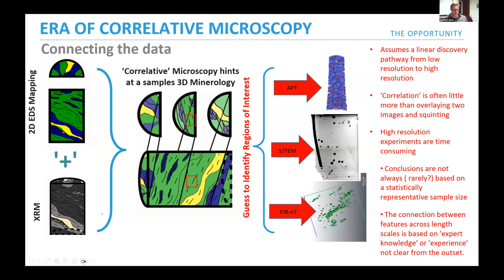We've entered what is called an era of correlated microscopy. The idea is that you take a sample, put it in an X-ray CT system, polish at least one surface, and take an energy dispersive spectroscopy map to get a chemical map. Overlaying these creates a correlative digital twin. From there you use expert knowledge to identify higher-resolution features to examine with SEM, FIB, STEM, or atom probe — always going from low-resolution millimeter-scale data down to potentially atomic resolution.